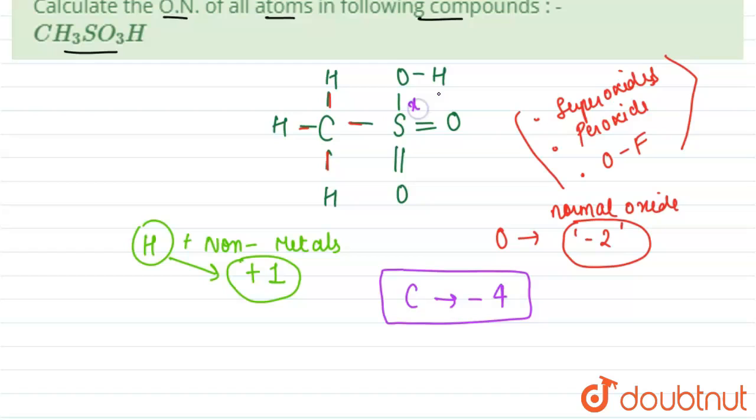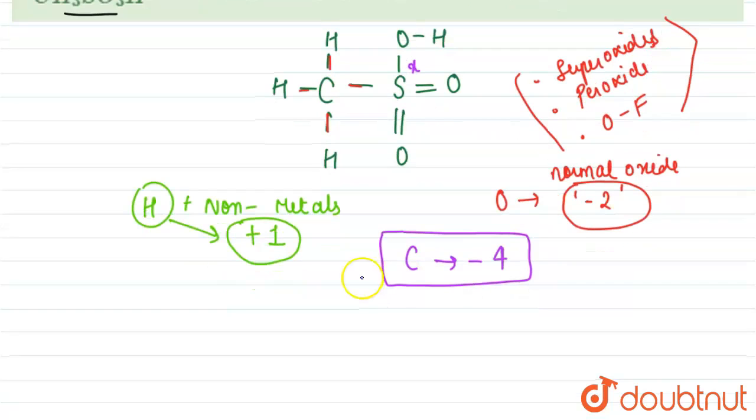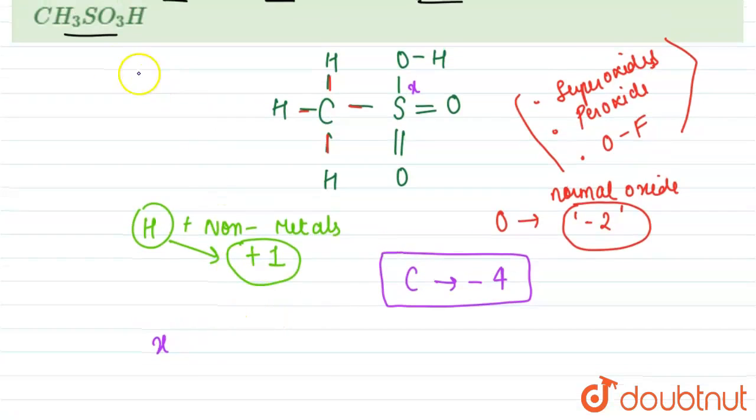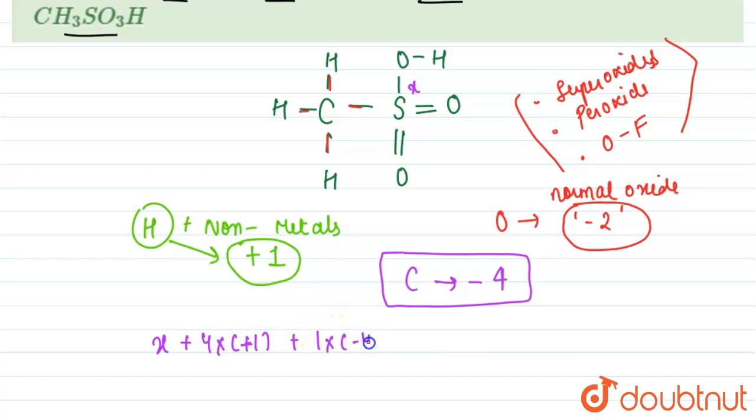can now calculate the oxidation state of sulfur. Sulfur we can take as x. So we know sulfur is only one, so x times one. Then we have four hydrogen, each hydrogen will show plus one, so four times plus one. Then we have one carbon, so one times minus